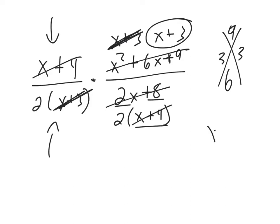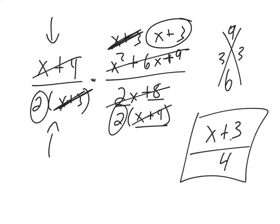So now we're left with (x plus 3) on the top. And then on the bottom, we just have these two 2s. So I have 2 times 2 is 4. And this would be my answer if I was multiplying.